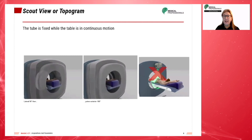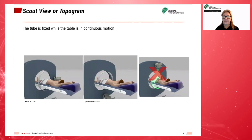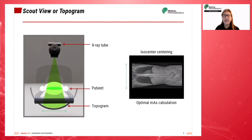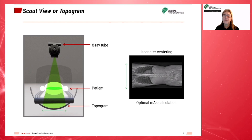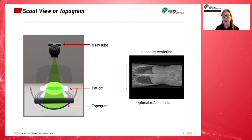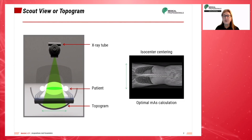When you hit the play button, you will see how this occurs. Using information from an initial scout view, the scan mA value is individually adjusted depending on the position for each tube rotation. An enhanced version of mA modulation available on some scanners allows mA adjustment not only for each rotation, but also as a function of angle during each rotation.